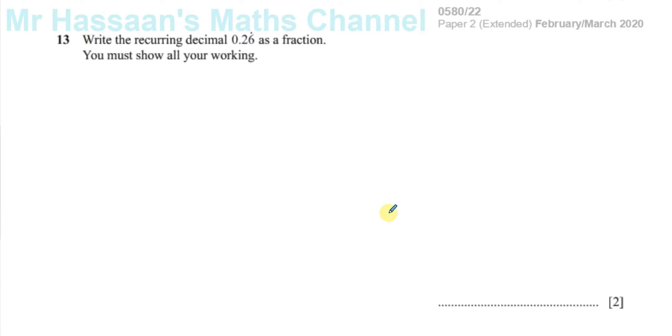Question number 13 from paper 2 of February-March 2020. This is about recurring decimals and it tells us to write the recurring decimal 0.26 recurring as a fraction. You must show all your working. Now there's two different ways I've seen that this can be done and I'll show you both ways.